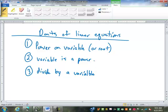These are the three things. I often call them the don'ts, or the three don'ts, of linear equations. Those are the three things that linear equations do not have. They cannot have. No powers or roots on any of the variables. None of the variables can be a power. And you can't divide by a variable.